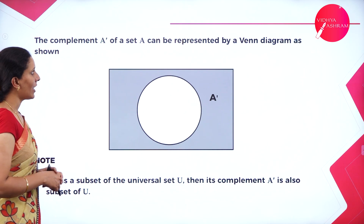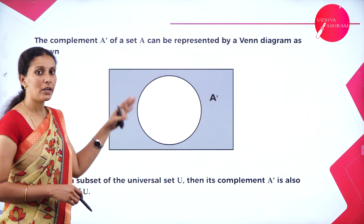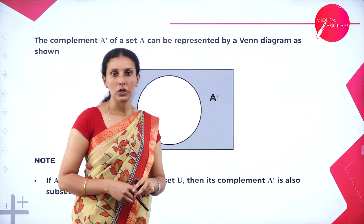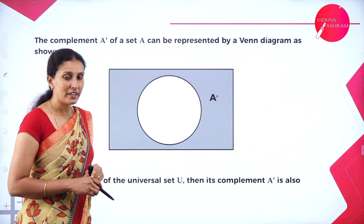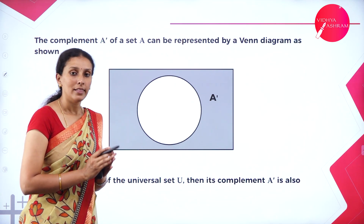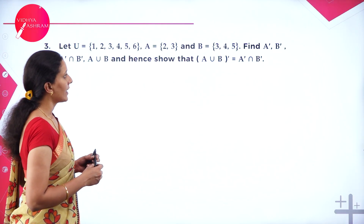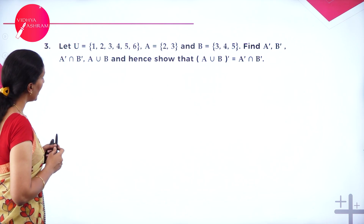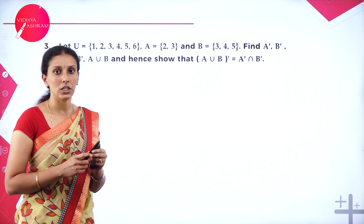The complement A dash is represented by the shaded region outside the circle inside the rectangle. Elements of A are in U — that's why A is a subset of U. You can also observe that elements of A dash are also inside the universal set, so A dash is also a subset of U. Next example: U equal {1,2,3,4,5,6}, A equal {2,3}, B equal {3,4,5}. Find A dash, B dash, A dash intersection B dash, A union B, and hence verify that A union B whole dash equals A dash intersection B dash.